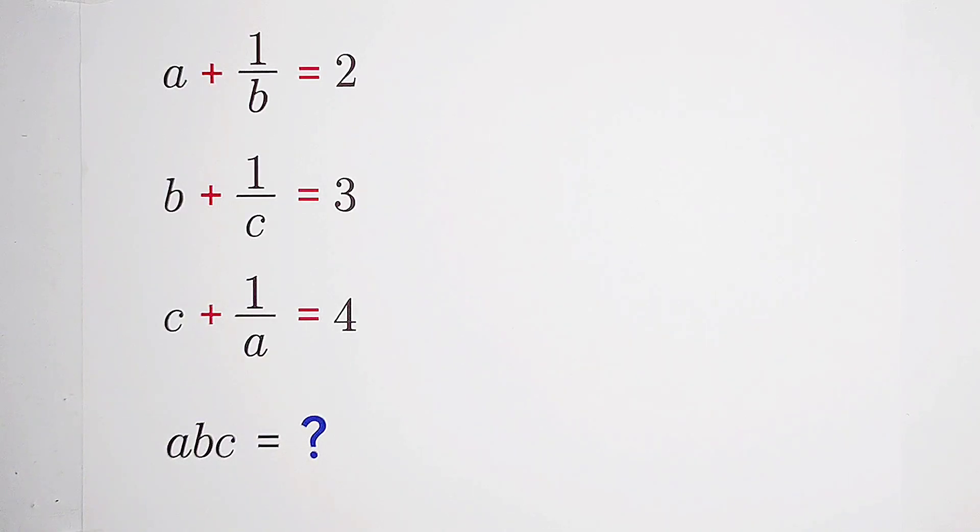But how? If we want to get a times b times c, then we should multiply these three equations times each other.